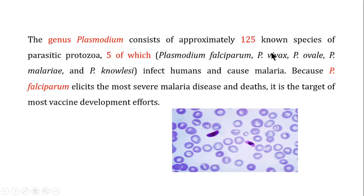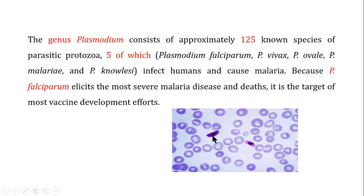Among the five Plasmodium species that infect humans, Plasmodium falciparum elicits the most severe malaria disease and deaths, and therefore it is the target of most vaccine development efforts. When you stain a malaria parasite and look at it under a microscope, you can see a characteristic shape.